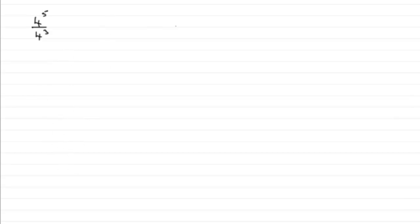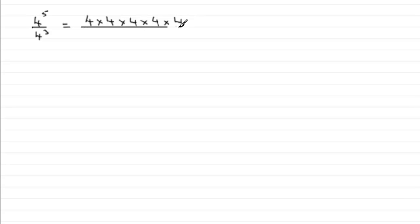We should be familiar with the fact that 4 to the power of 5 is 4 repeatedly multiplied by itself 5 times over. And we're dividing it by 4 cubed, or 4 to the power of 3 — so 4 repeatedly multiplied by itself 3 times over. Now to simplify this, because we're dealing with the same base number (in this example, 4), we can do some cancelling.